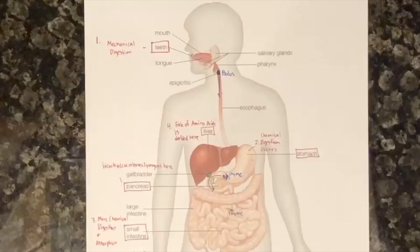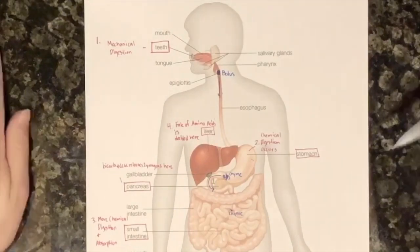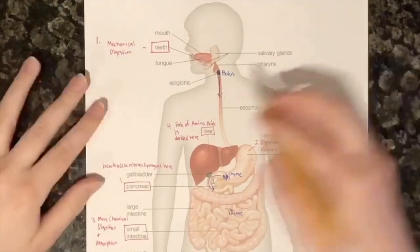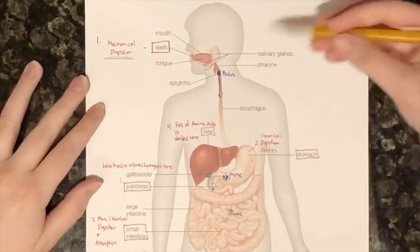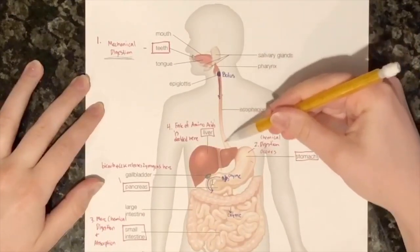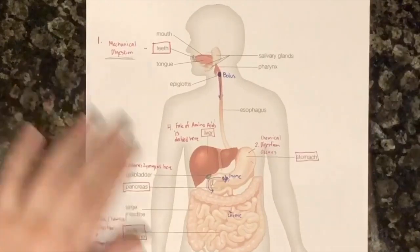So what happens when we eat protein? The breakdown of food is initiated in the mouth by the chewing of teeth. This is called mechanical digestion. The bolus of food moves down the alimentary canal to the stomach. This is where enzymes called proteases begin to chemically break down the food.